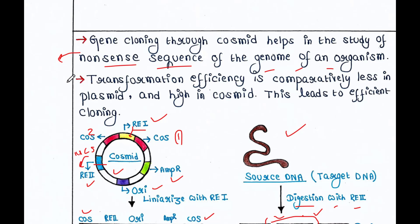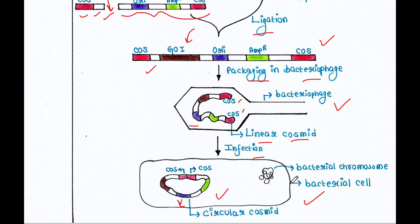Transformation efficiency is comparatively less with Plasmid but high with Cosmid, which leads to more efficient cloning. When we do transformation using a bacterial cell and Plasmid, it requires several methods and is not always successful. But when we use bacteriophage to infect a bacterial cell, this is a very natural process — viruses naturally infect bacterial cells — making it much more efficient with a higher success rate.